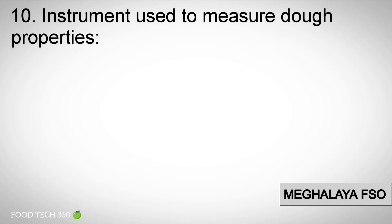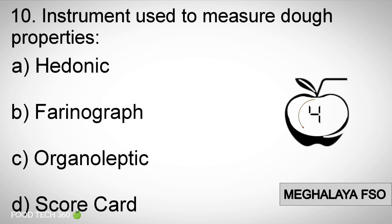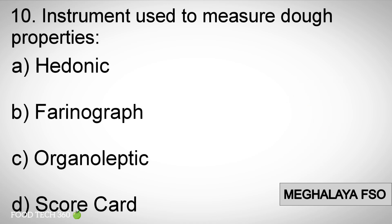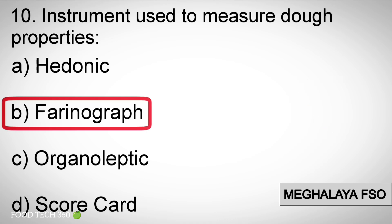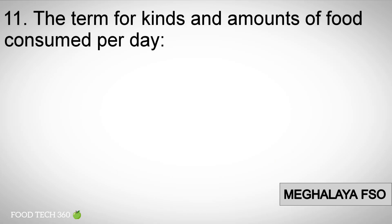Question number ten: Instrument used to measure dough properties. Options: A) Hedonic, B) Farinograph, C) Organoleptic, D) Scorecard. Correct answer: B) Farinograph.